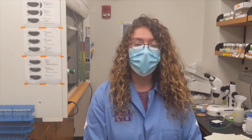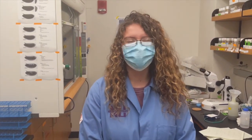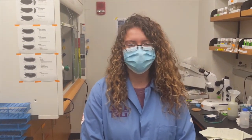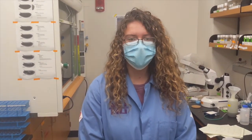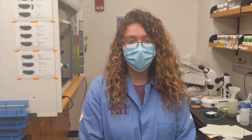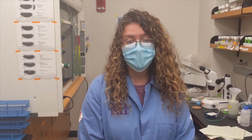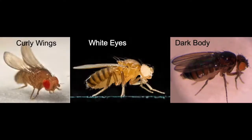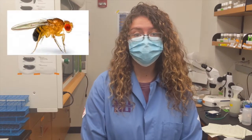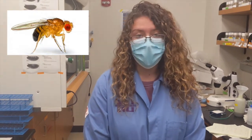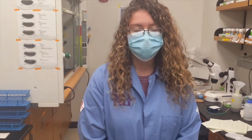Sometimes not all flies in the same bottle have exactly the same set of genes. To distinguish flies from one another, we use what are called genetic markers. These can be curly wings, white eyes, or a dark body. Wild type or normal flies have straight wings, red eyes, and a lighter body.